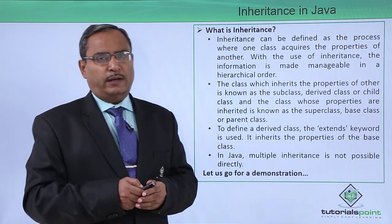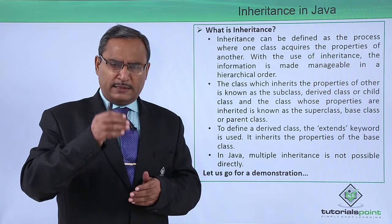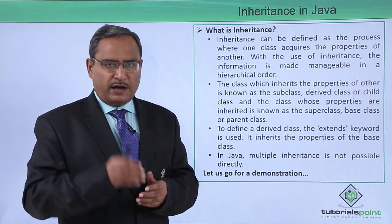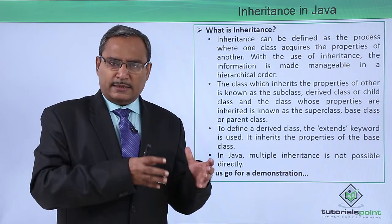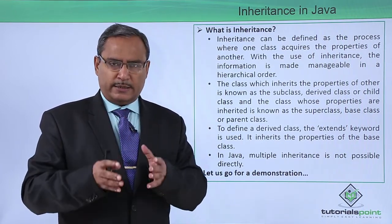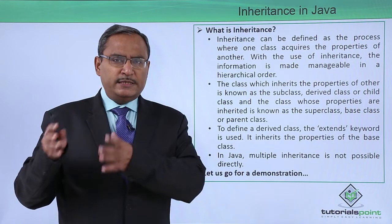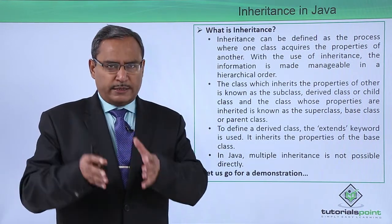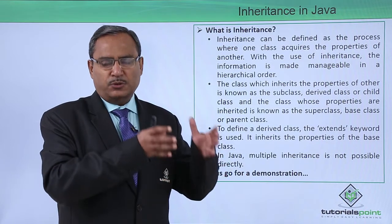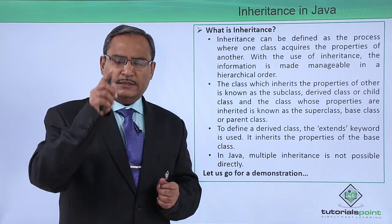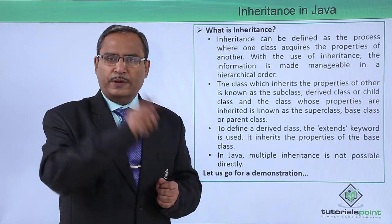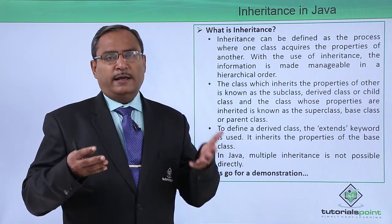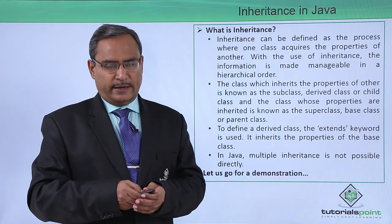Suppose I have defined one class that is a person. A person has some basic member variables and basic member functions. A dancer is also a person, a cricketer is also a person, and a teacher is also a person. They will have their own dedicated separate properties and functions, but the basic properties of the person class will always be common to all of them. That is the basic inherent feature of inheritance.